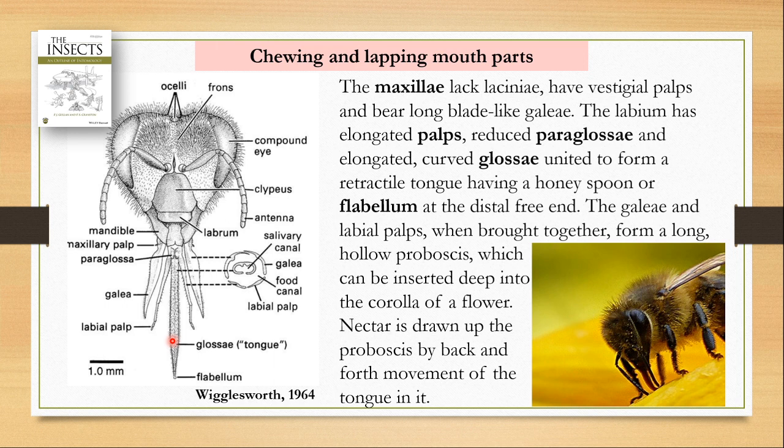So honeybees use their mouthparts not only to collect nectar but also to form the hexagonal cells in their hives. For that, they have spatulate smooth mandibles and lapping-type modifications in their labium and maxillae.